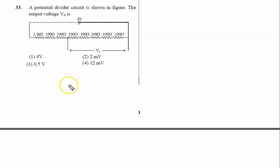A potential divider circuit is shown in the figure. The output voltage V0 is across these two points A and B.